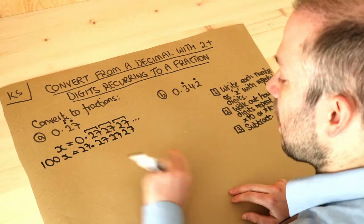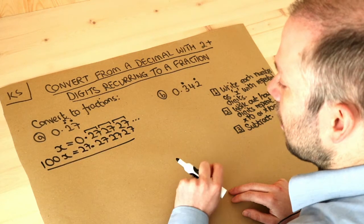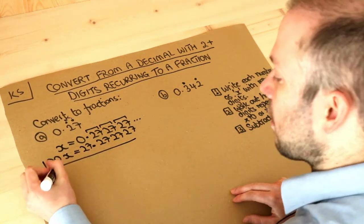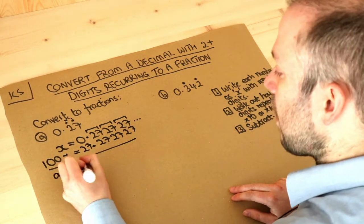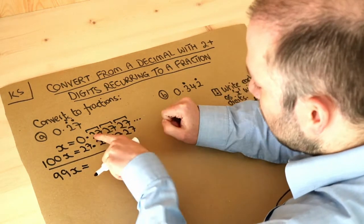Now step three is then to subtract these, so we're going to do the second equation minus the first equation. What's 100x minus x? Well that's 99x. 100 lots of x minus one lot of x is 99 lots of x.